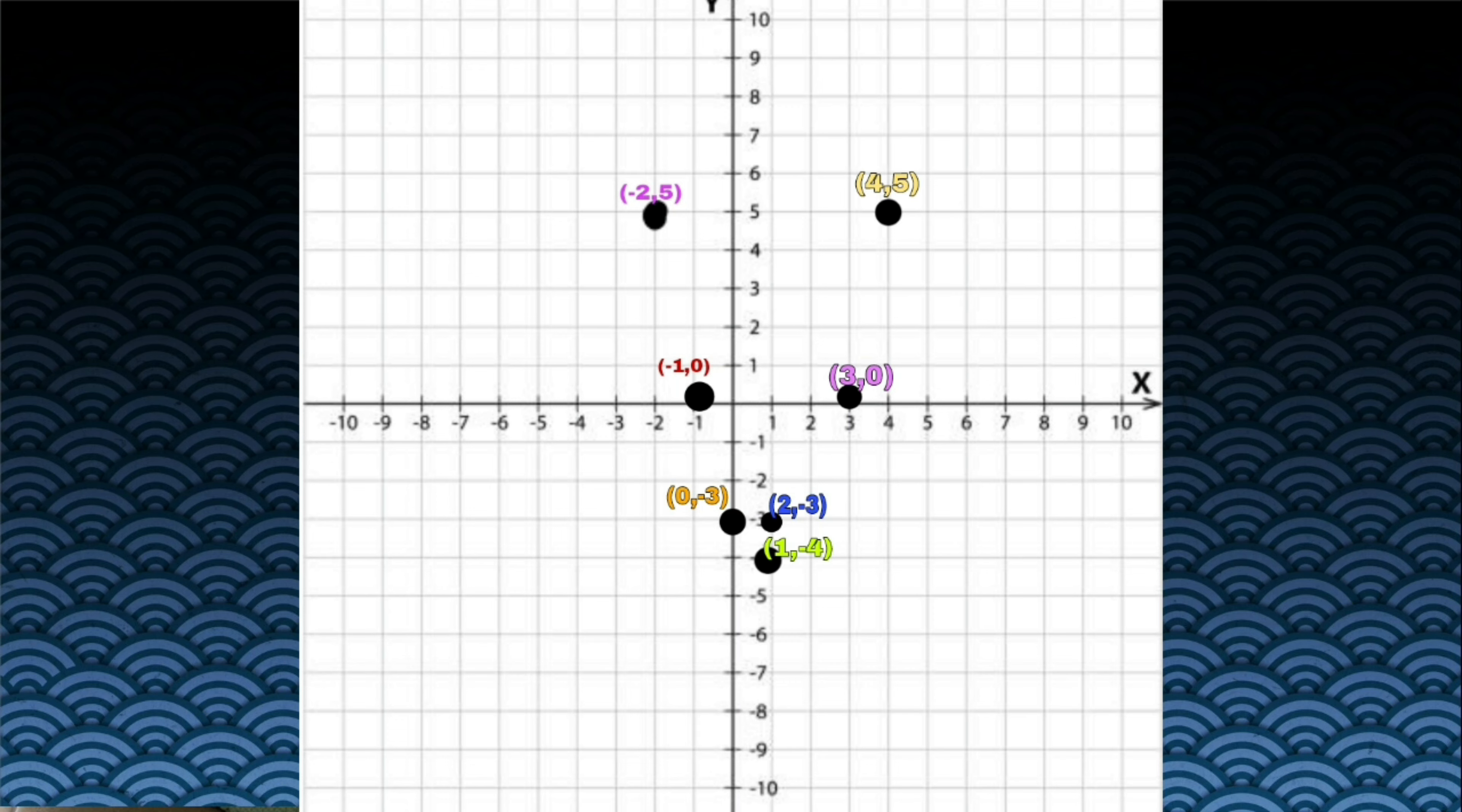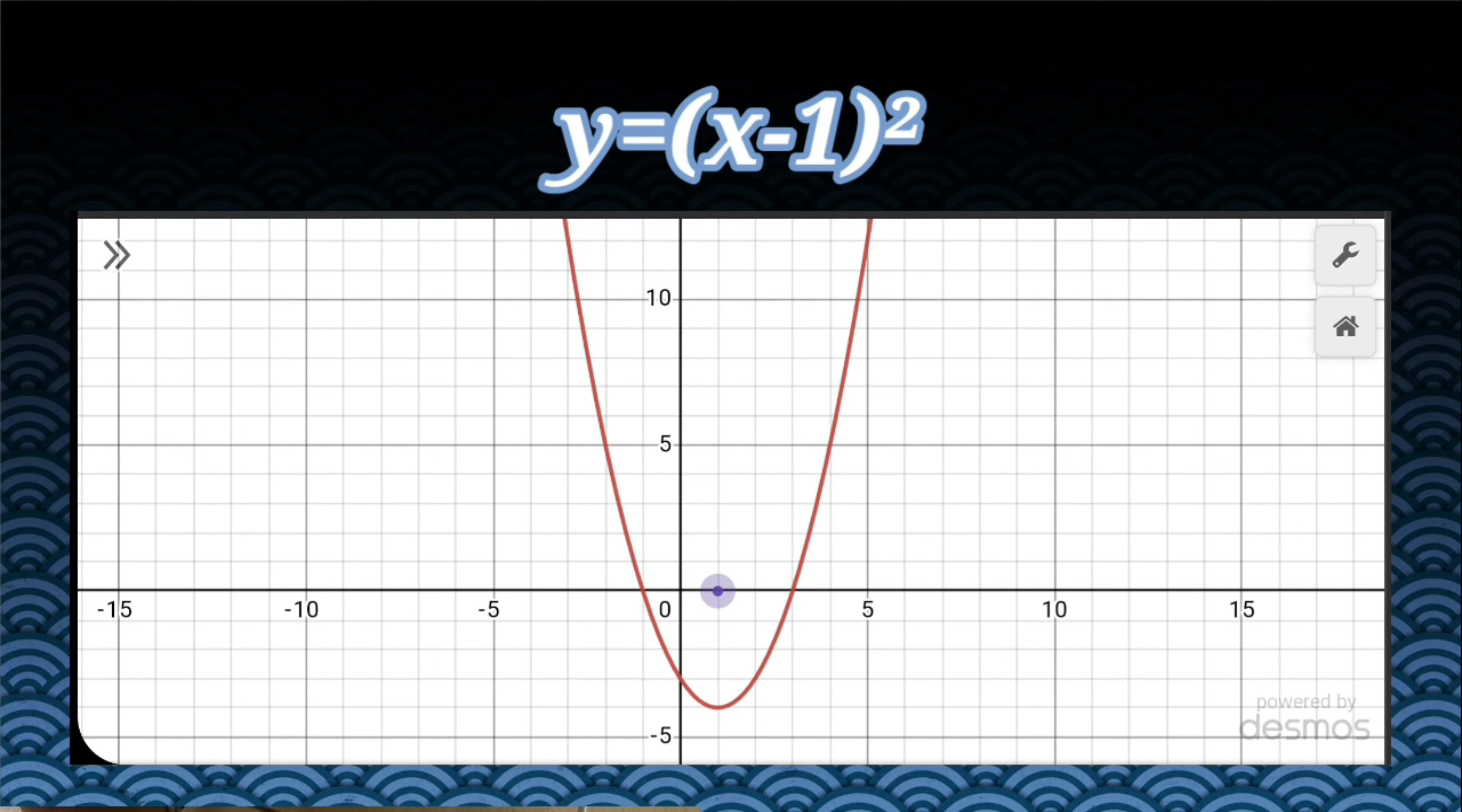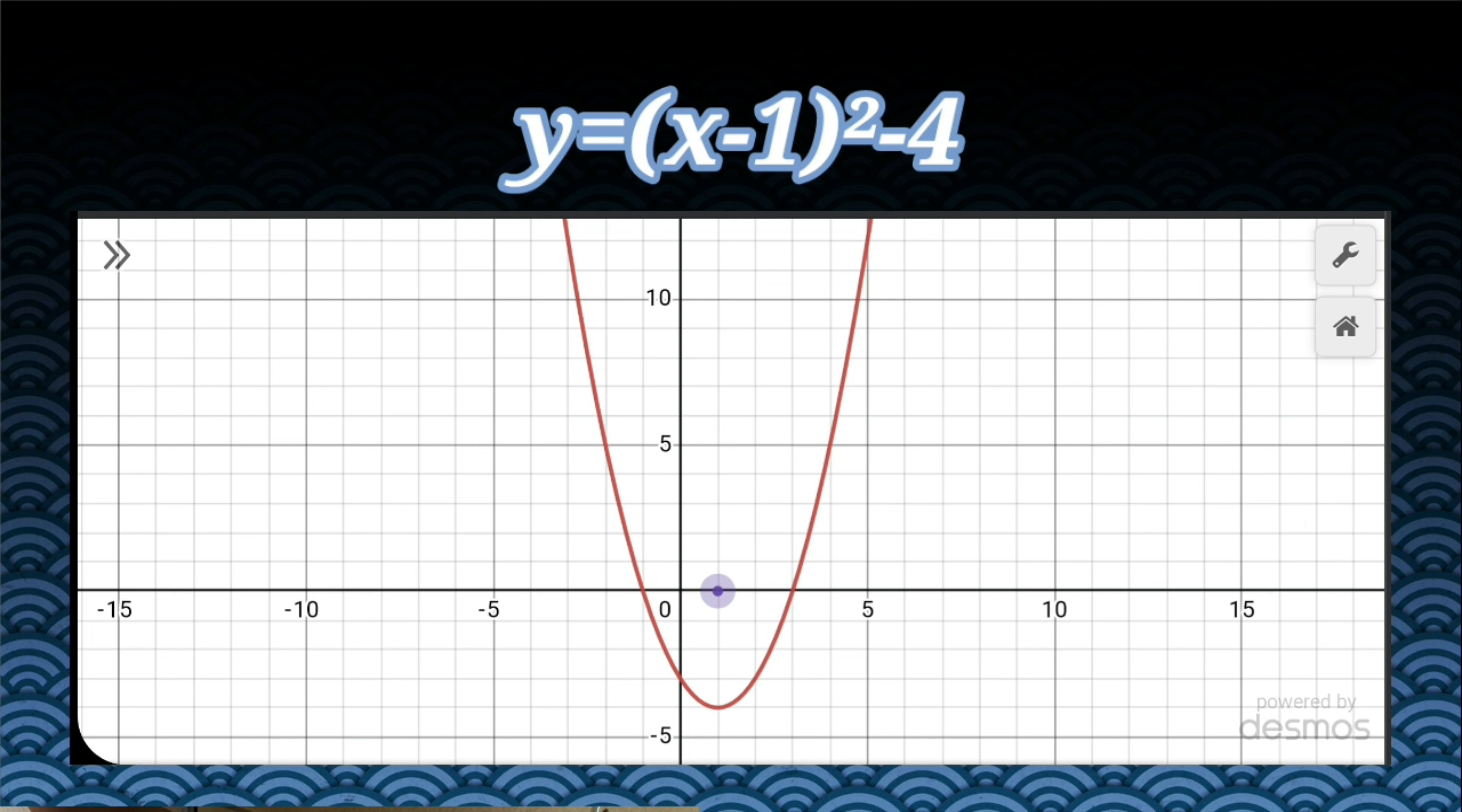What we will do is connect the points by a smooth curve. So that's the graph of y equals the quantity of x minus 1 squared minus 4. Since the value of our a is positive, the opening of our whole graph is upward. Now you have the graph of the quadratic function.